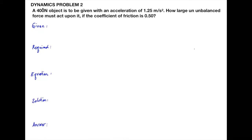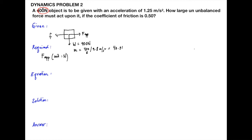Problem 2: A 400 Newton object is to be given an acceleration of 1.25 meter per second squared. How large an imbalance force must act upon it if the coefficient of friction is 0.50? We draw the free body diagram. The required value is the applied force, with units of Newton.